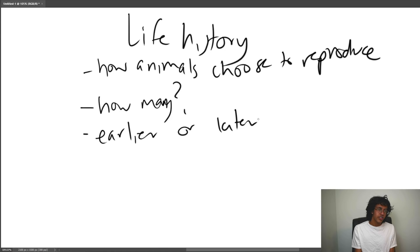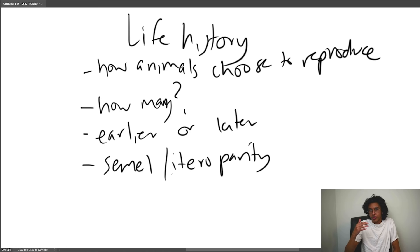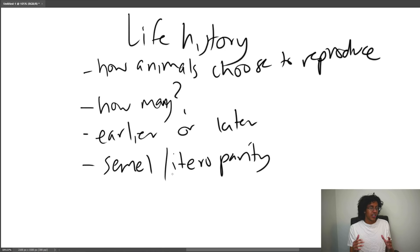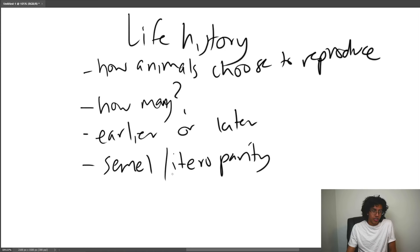Finally, there's semelparity versus iteroparity. Semelparity means reproducing once and then dying — flies, tapeworms, and similar organisms reproduce in one big boom. Iteroparity means reproducing many times through repeated cycles — like mammals, which go through estrus or menstrual cycles and produce offspring repeatedly. 'Semi' suggests one time, and 'itero' suggests doing it iteratively, over and over.